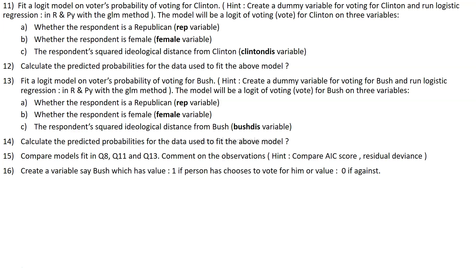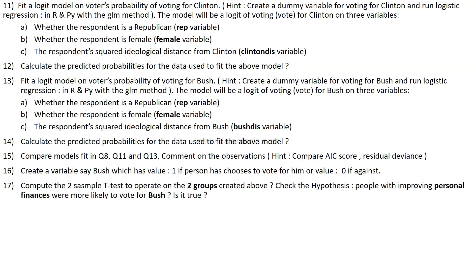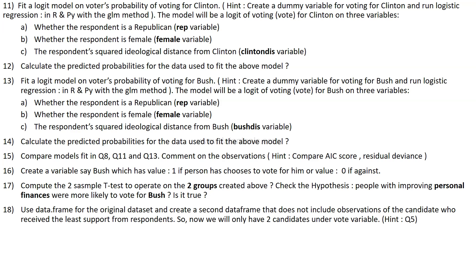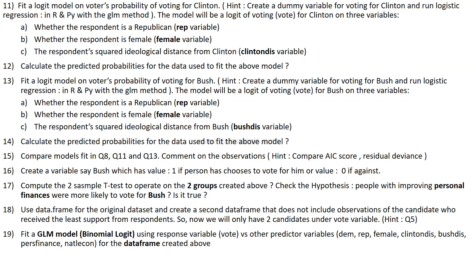Question sixteen asks to create a variable 'bush' with value one if a person votes for Bush and zero otherwise, then compute a two-sample t-test on the two groups to check the hypothesis that people with improving personal finances are more likely to vote for Bush. Question seventeen asks to create a second dataframe excluding observations for the candidate who received the least support, leaving only two candidates in the vote variable.